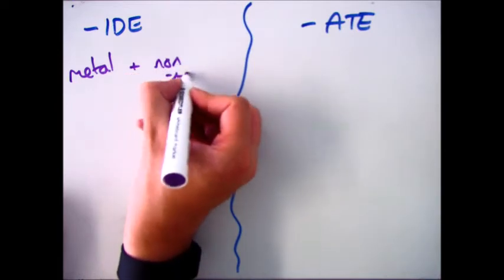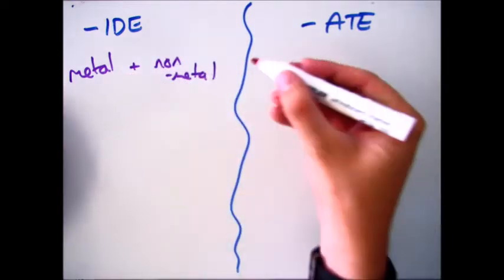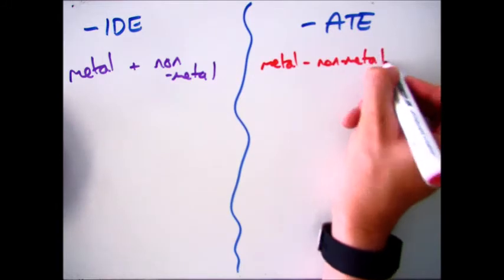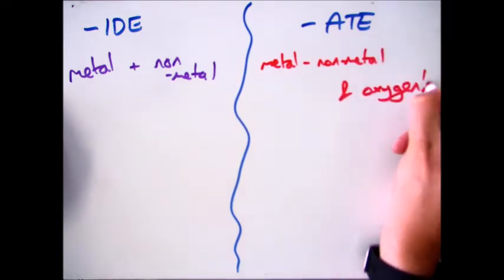If you have something that ends in -ide, it means you have a metal and a nonmetal. If you have something that ends in -ate, you have a metal, a nonmetal, and oxygen on the end.